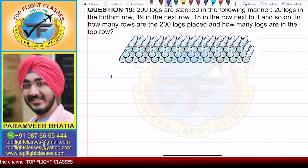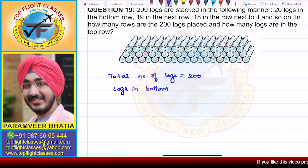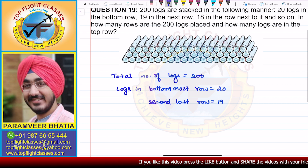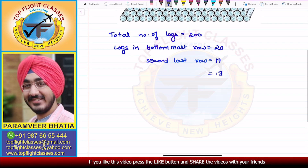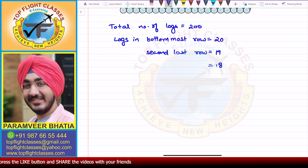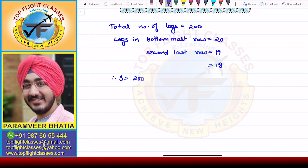In this case, we have the total number of logs equal to 200, and logs in the bottommost row equal to 20. In the second last row that is 19, then 18 in the next row. The total number of logs, which is the sum of all the logs, is equal to 200. So S is equal to 200. In the bottommost row, our number of logs is 20, so A is equal to 20.